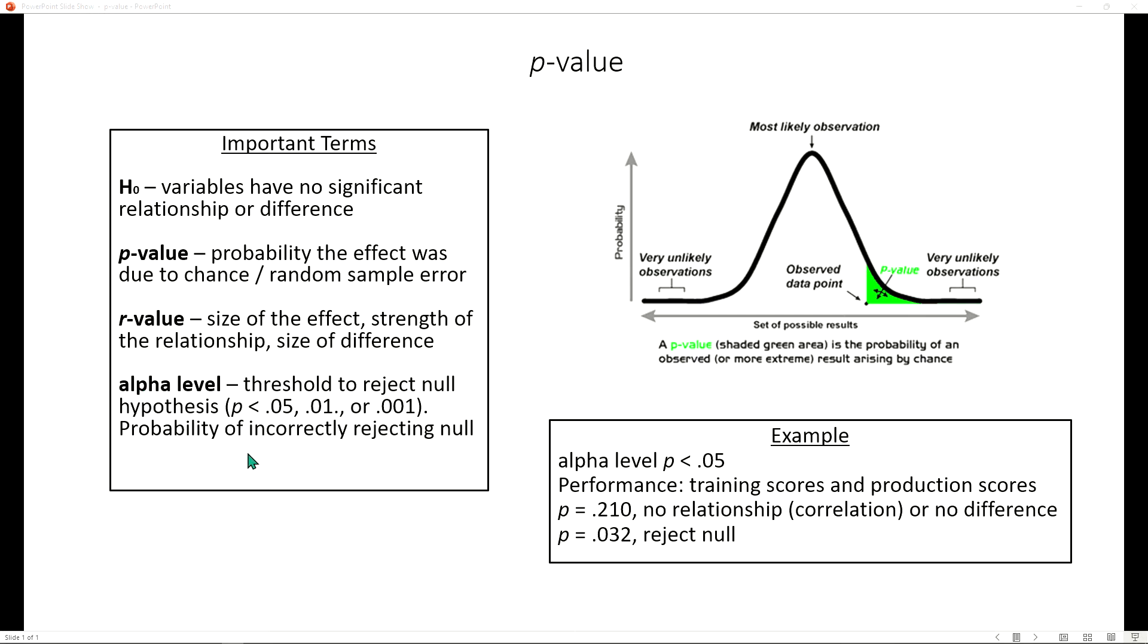The alpha level is the threshold to reject the null hypothesis. Commonly the p-value is less than 0.05. The alpha level might be 0.01 or 0.001.